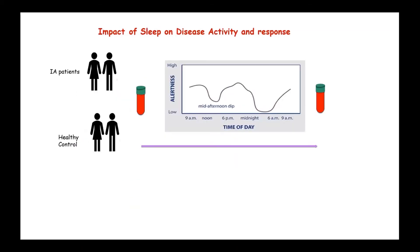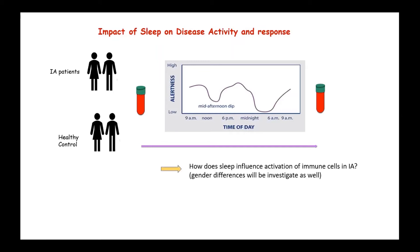We are also investigating the effect of sleep on disease activity and response to treatment by recruiting healthy subjects as controls and inflammatory arthritis patients, both male and female. We are going to collect blood at different times throughout the day to understand how sleep influences the activation of immune cells in inflammatory arthritis, bearing in mind possible gender bias in this data, and how the lack of sleep correlates with disease activity.